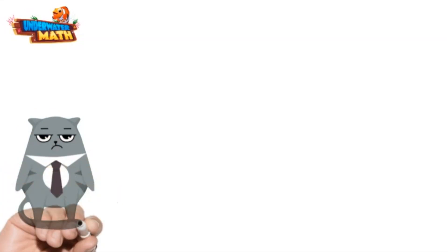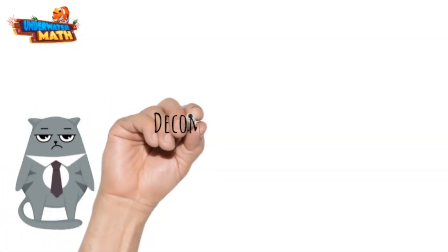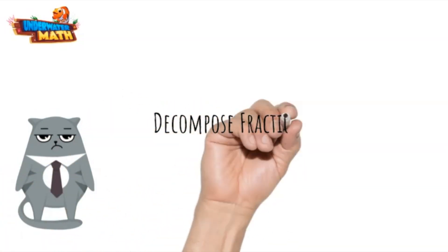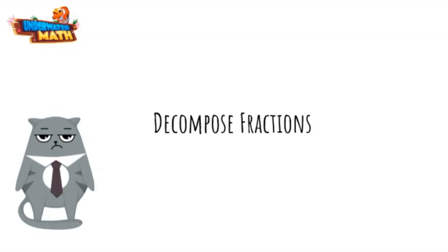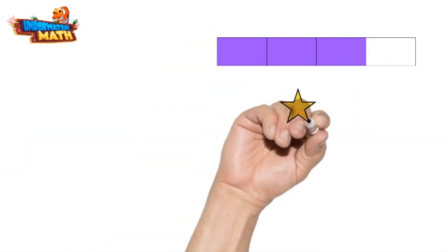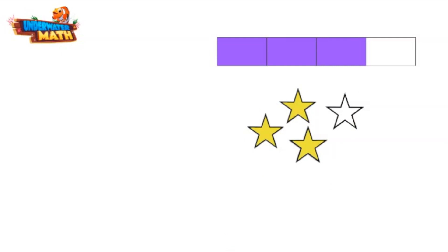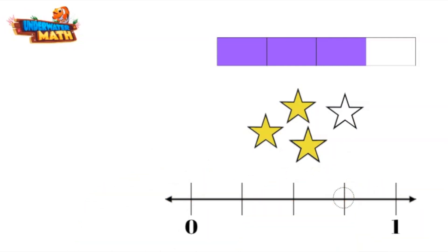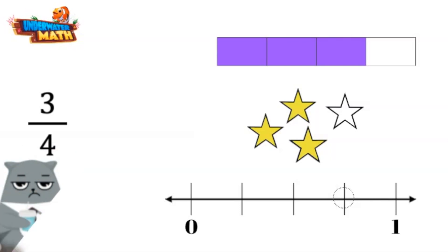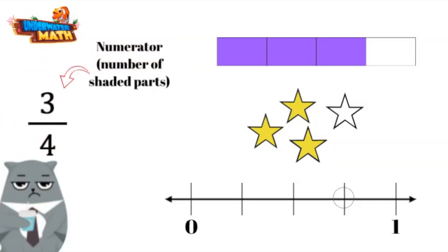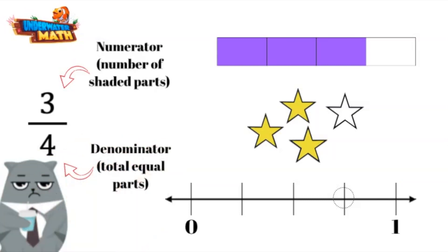Hi, welcome back! Today we are going to decompose fractions, and this grumpy kitty is going to help us. We can represent fractions using area models, sets, and number lines. All of these models show the fraction three-fourths. The numerator represents three parts shaded, and the denominator represents the four total equal parts.